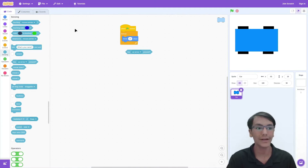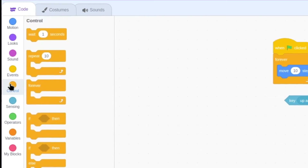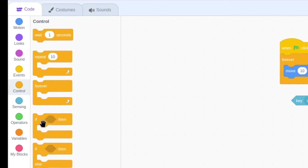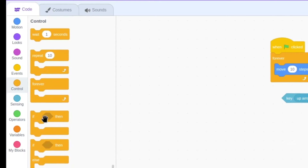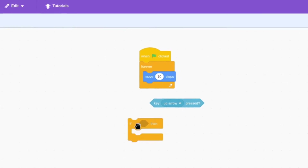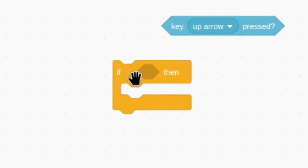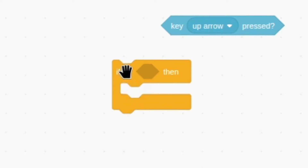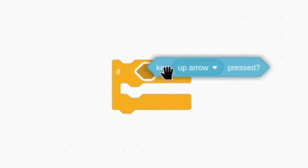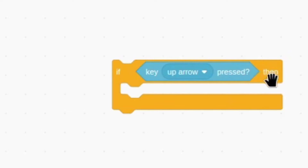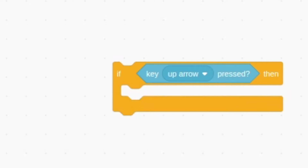The block we want is the if block in control — right here. It even has the hexagon shape that matches. What does this block do? Well, the if block works like this: if something is true, like if the key up arrow is pressed, then it runs any code inside. This code will only run when we're pressing the up arrow. If we're not pressing the up arrow at all, none of the blocks inside run.